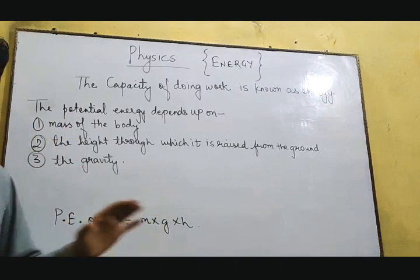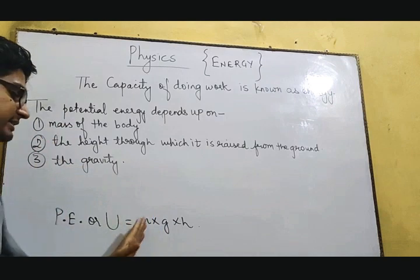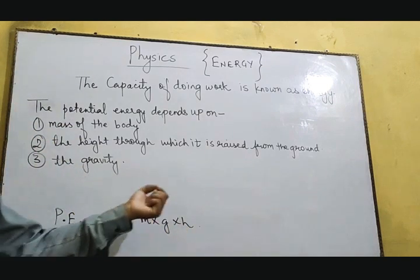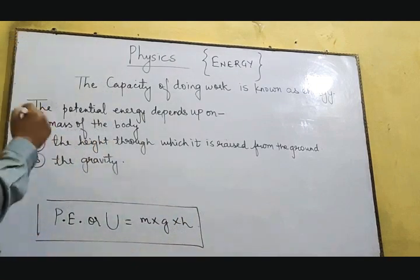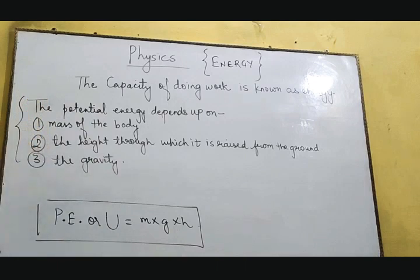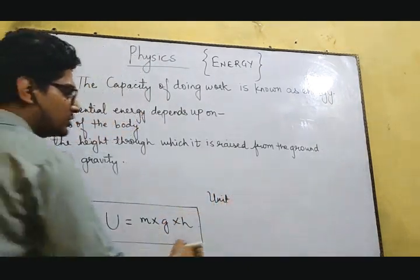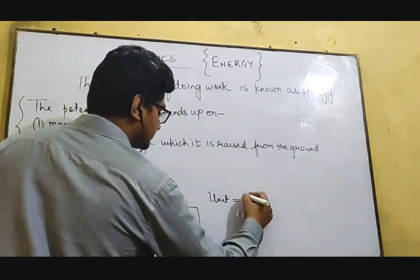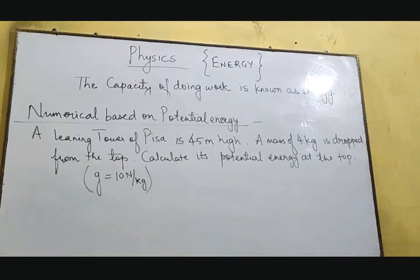So the three factors are mass, height, and gravity. Using these three factors we can apply the formula of potential energy. The formula of potential energy is: PE = M × G × H — mass into gravity into height. The unit of potential energy, since it is a type of energy, is Joules (J).